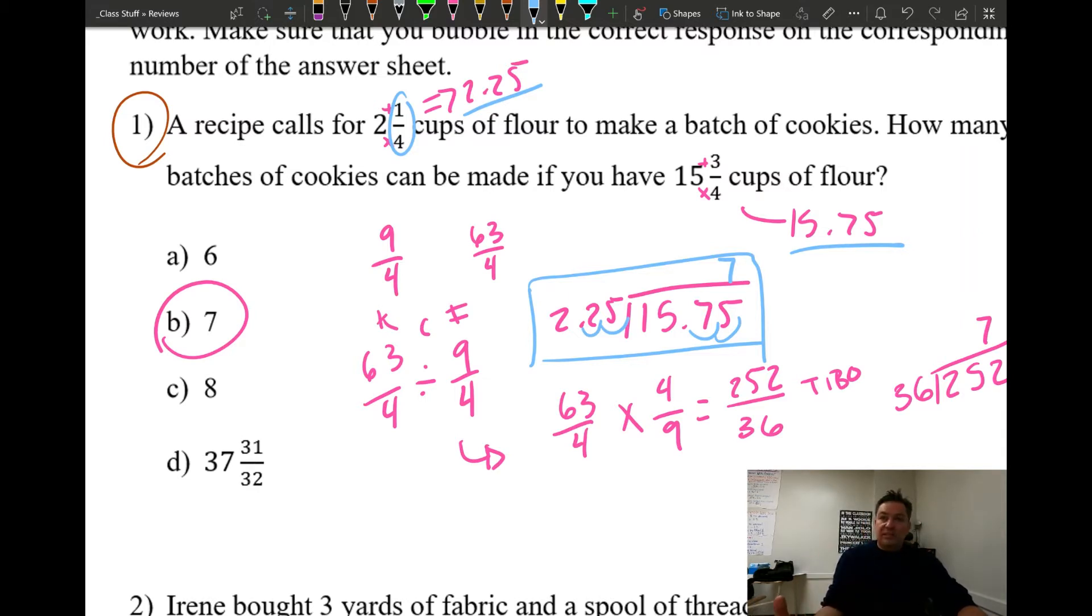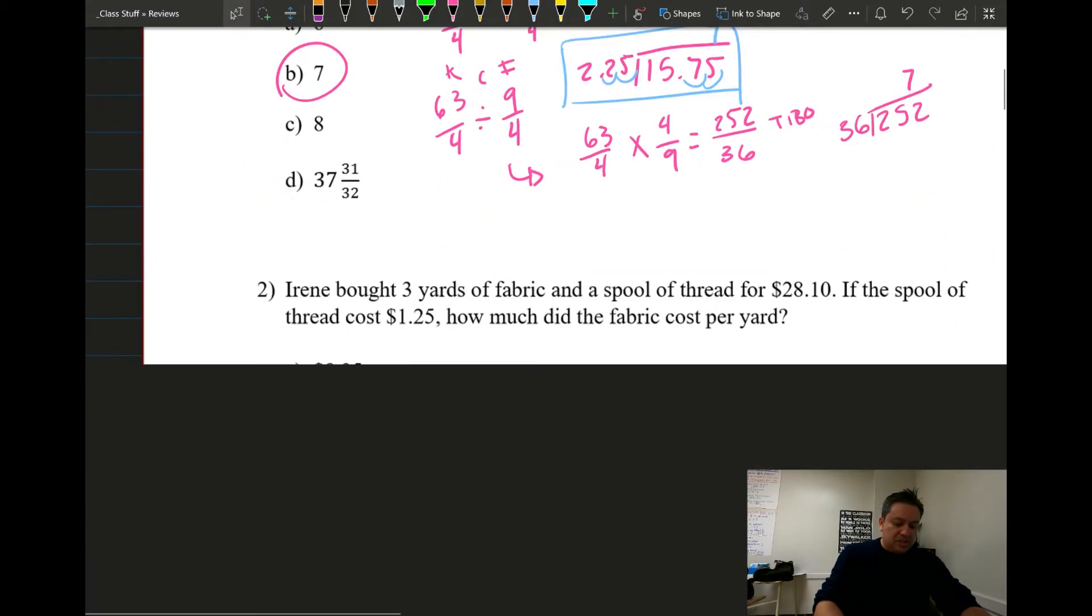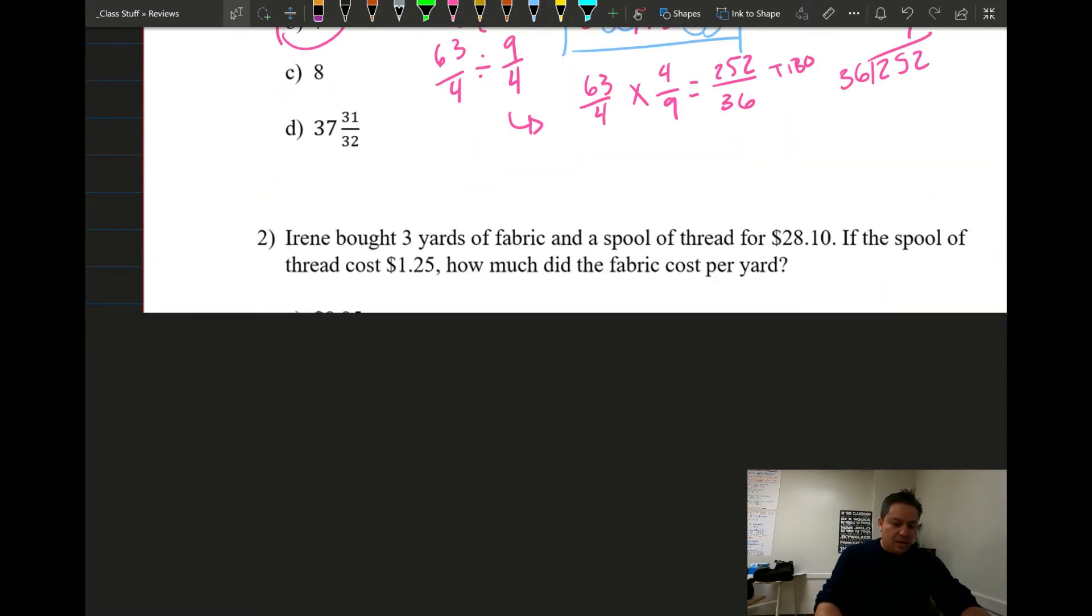Now if you convert them to a decimal and you got this right here, if you divide, remember 1-2-1-2, you got to move the decimal first of all. And if you do 1575 divided by 225, it gives you seven as well, same answer. Would you rather work with decimals, would you rather work with fractions? It's up to you, you can get to the same answer doing it different ways.